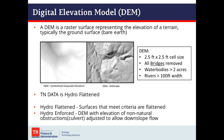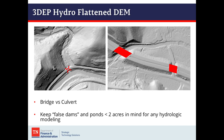Note that 3DEP data is not hydro-enforced — that would be a DEM with elevations of non-natural obstructions adjusted for downslope flow, which is important if you're doing hydrologic modeling. In the example on the left we have a culvert that was not taken out per USGS specifications, and bridges on the right that were taken out.